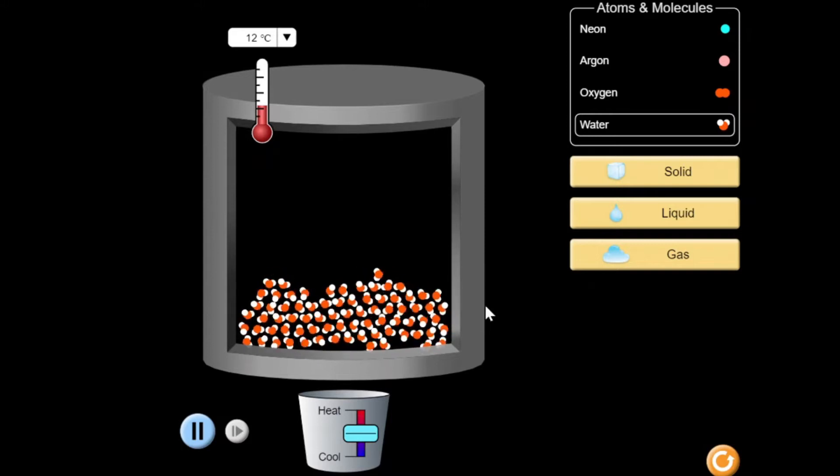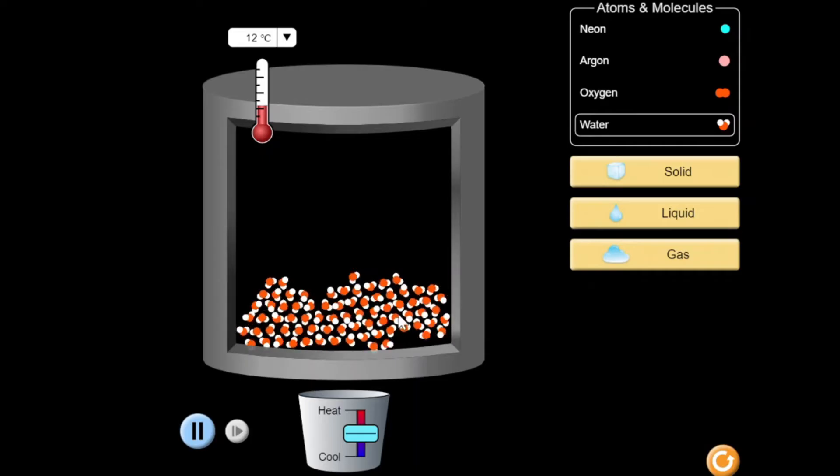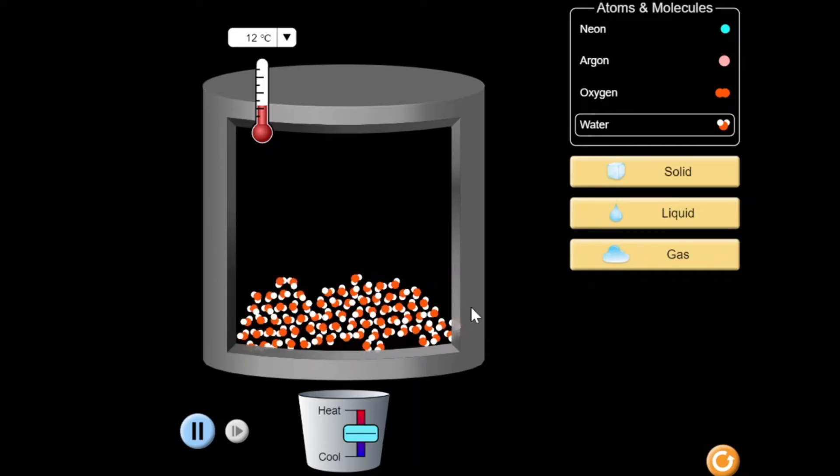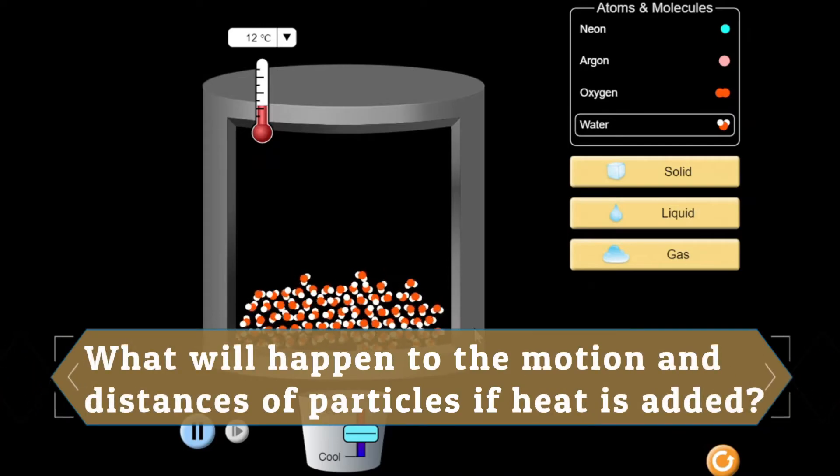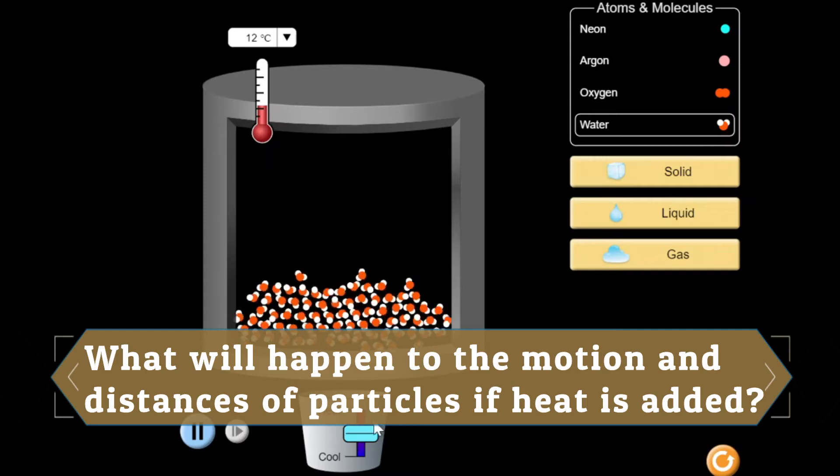To start with, observe the motion of the particles of water and their distances to one another. What do you think will happen to the motion of the particles and their distances to one another if we add heat to the container? Pause the video and make your predictions.